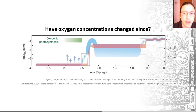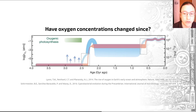There was then a lag before the accumulation of free oxygen in the atmosphere. This lag was due to buffering reactions that used up early oxygen, such as reactions with reduced hydrogen, carbon, sulfur, and iron in the Earth's early oceans.